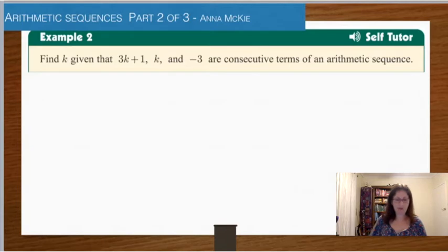Looking at this example here, find k given that 3k plus 1, k, and negative 3 are consecutive terms of an arithmetic sequence, so they're next to each other.